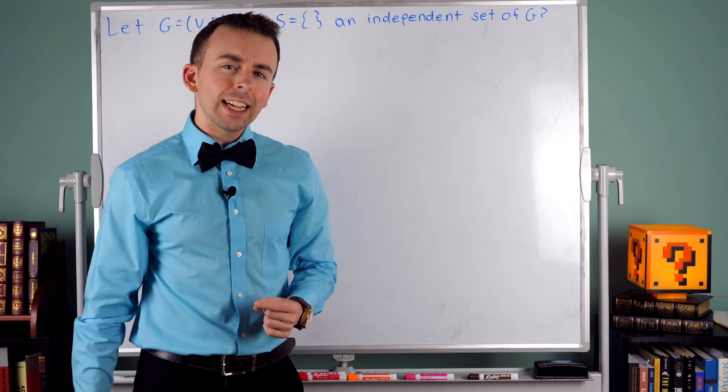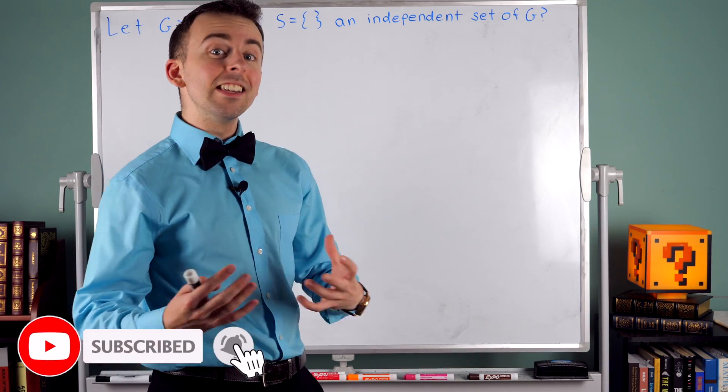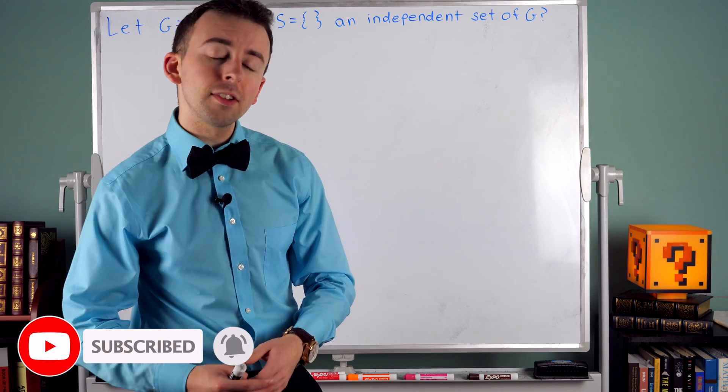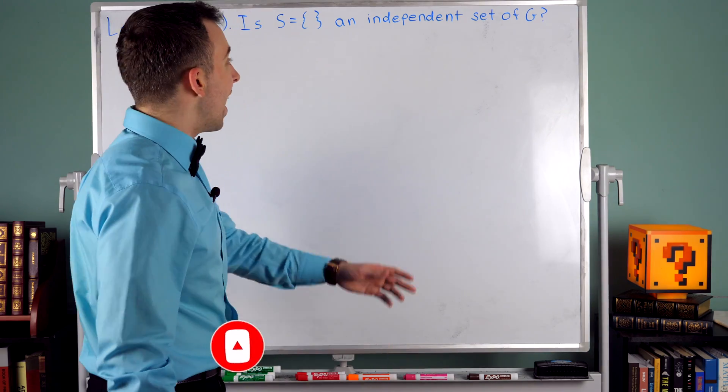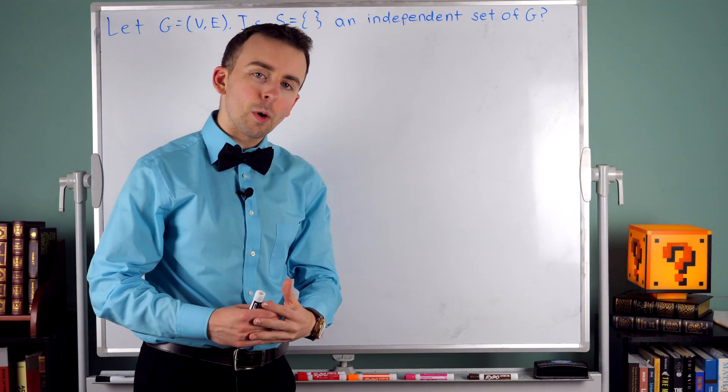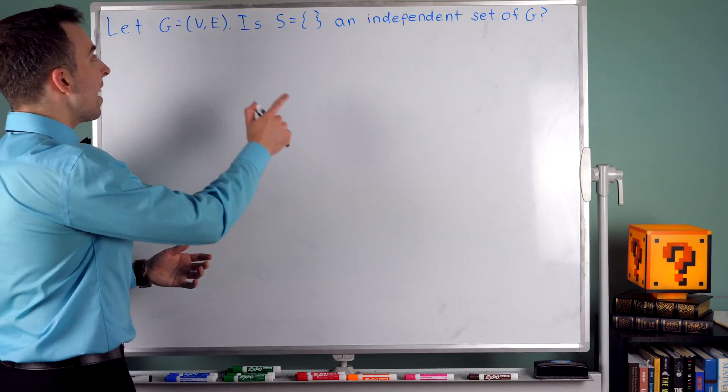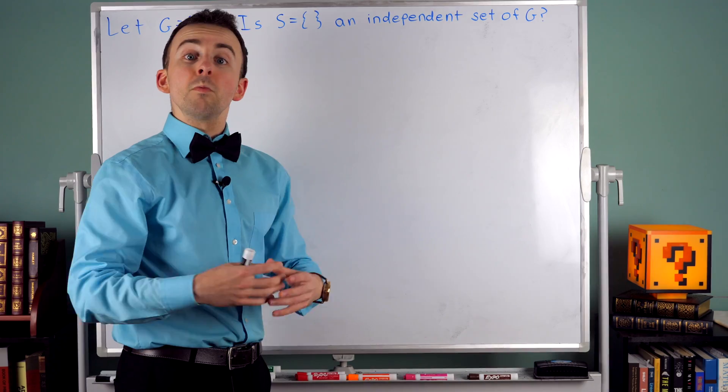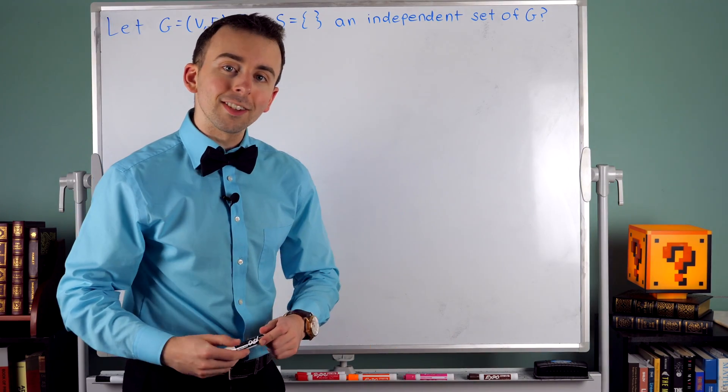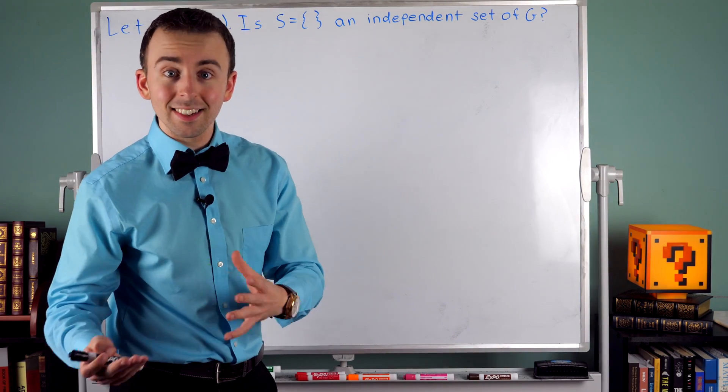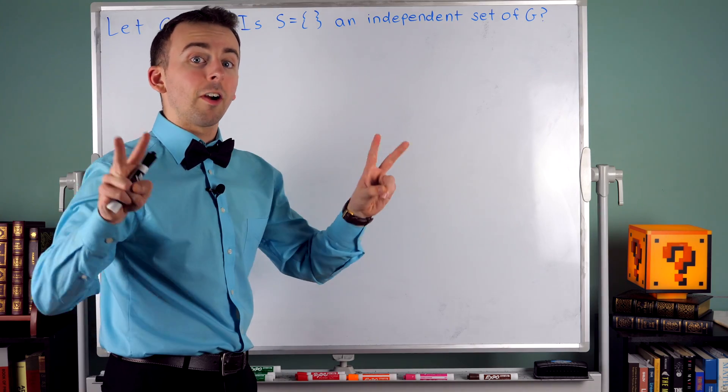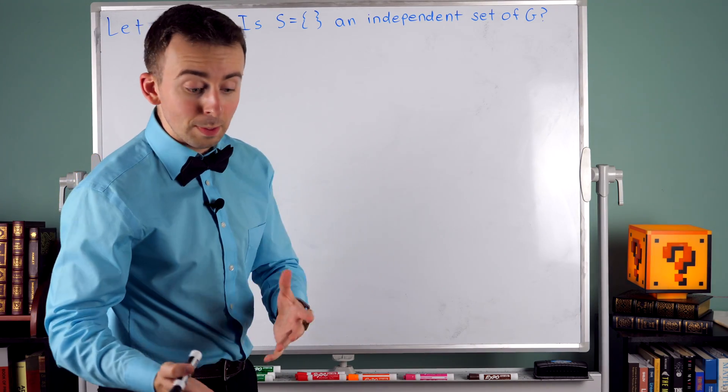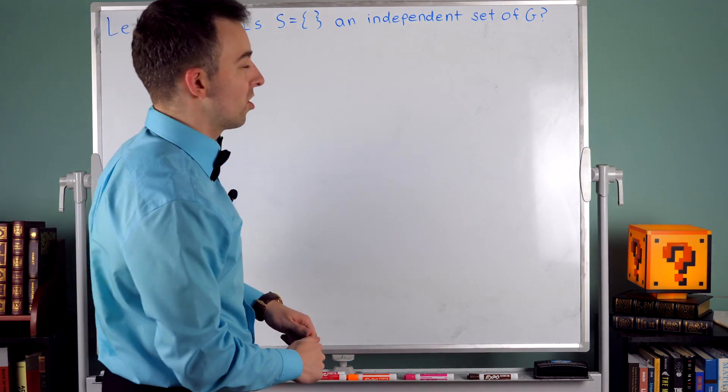I'll leave a link in the description to my lesson introducing independent sets of graphs. But as you may recall, an independent set of a graph is just a subset of the vertex set such that there are no pairs of adjacent vertices in the independent set. So all the vertices are independent, they're not adjacent to each other.